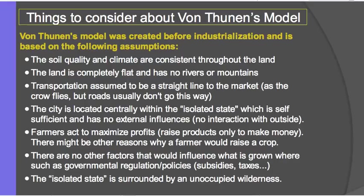He also assumed that the land is completely flat — there are no rivers, no mountains — it's flat and consistent, isotropic, meaning it's all the same. If it were all the same, then transportation cost would be consistently equal depending only on how far you are from the market. But if you have to cross a river or go over or around a mountain, that's definitely going to affect your transportation cost.